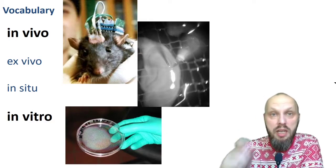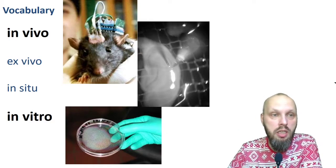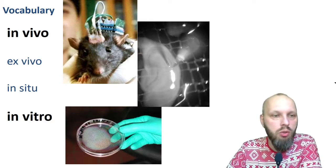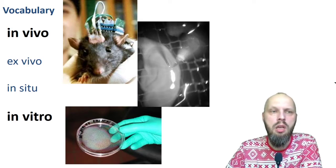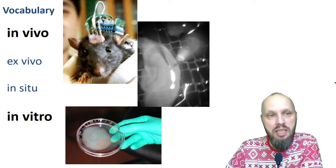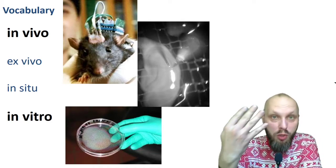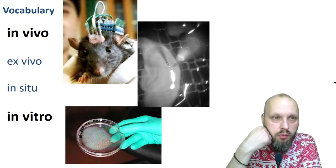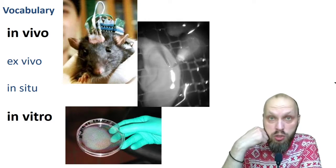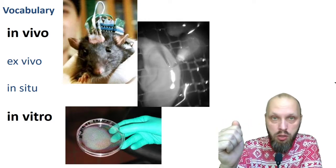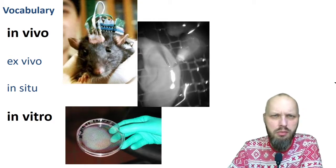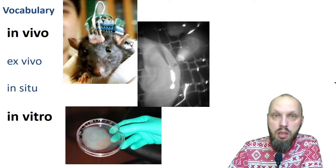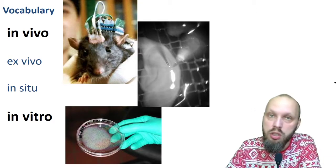Next, a whole bunch of words: in vivo, ex vivo, in situ, and in vitro. Of these four, two are most important — in vivo and in vitro — and two others are kind of rarely used intermediates.